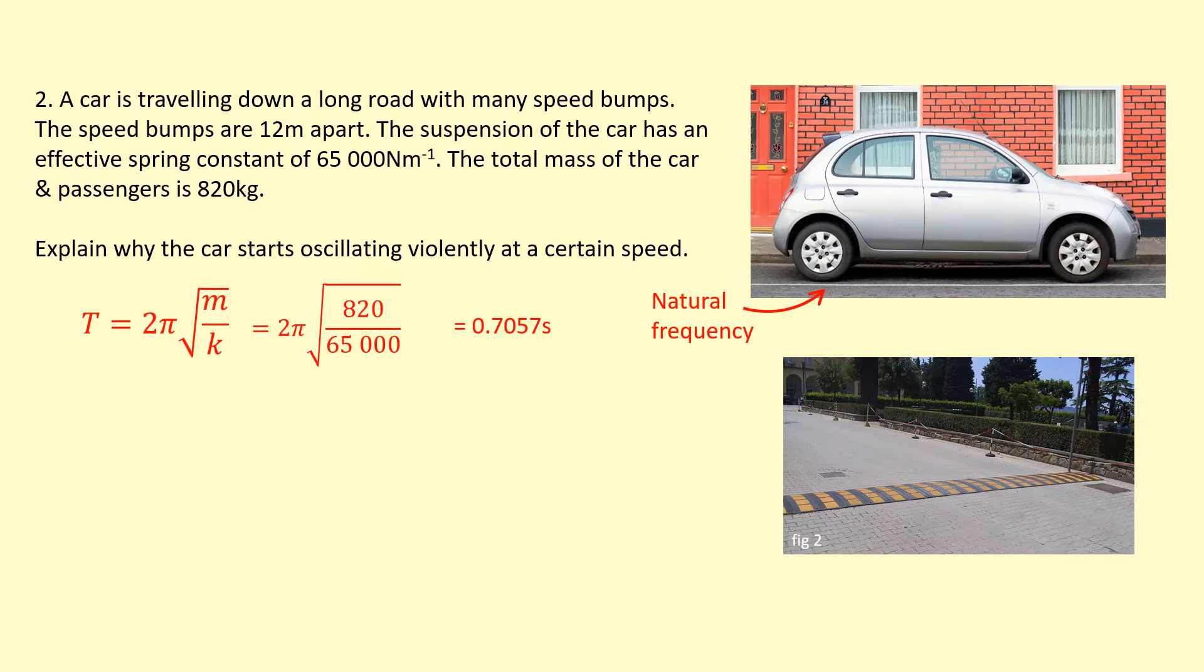Now, if it hits the speed bump at that same time period, the speed bumps will apply a periodic force to the car, and that's the driving frequency: how often the car hits the speed bumps per second. So if it's at a certain speed and it hits the speed bumps every 0.7057 seconds, the car is going to oscillate with a large amplitude because it's going to resonate.